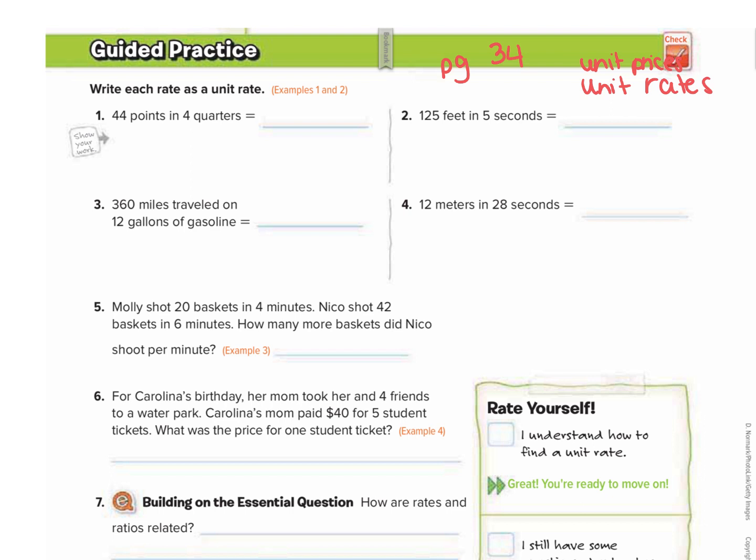So let's start with number one. It says write each rate as a unit rate. So we have 44 points in four quarters. So we're going to set it up as a fraction. The first number always goes as the numerator. So 44 points in four quarters. So now we actually want to divide it out to find how many points in one quarter. So that's what a unit is. So we do 44 divided by four, which gives us 11. So it's 11 points per quarter.